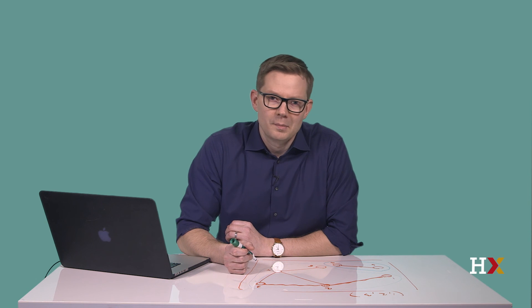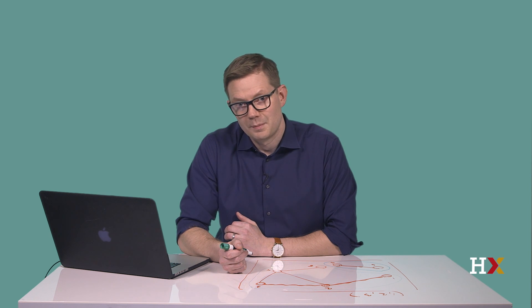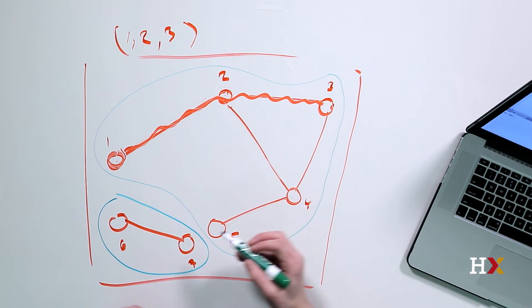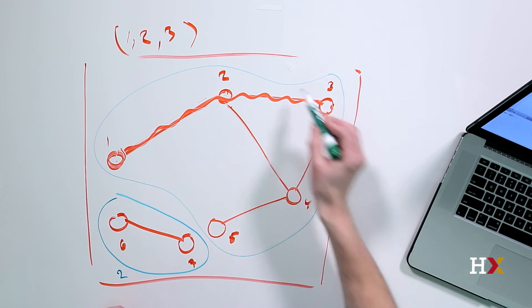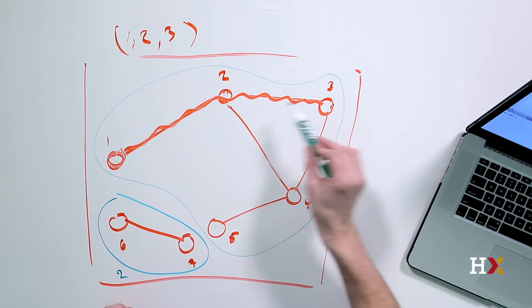The size of a component is defined as the number of nodes in the component. If there are several components in a graph, the largest component, the one having the greatest number of nodes, is called the largest connected component. In this case, the size of this component here is two. The size of this component is one, two, three, four, five.